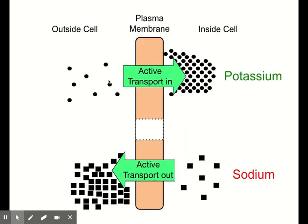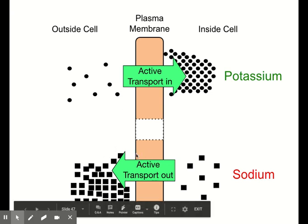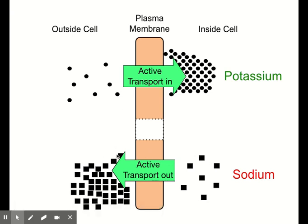Here's an example of what active transport might look like — this is what happens in the nerve cells in our body. They use active transport to move potassium ions into the cell using membrane proteins, moving them from a low concentration outside the cell to a high concentration inside the cell, against the concentration gradient, using energy. They do the same with sodium ions, except using active transport to move those ions out of the cell instead. Note: you're not required to know the specifics of nerve cell active transport for the exam.